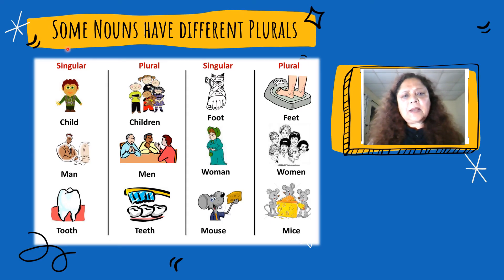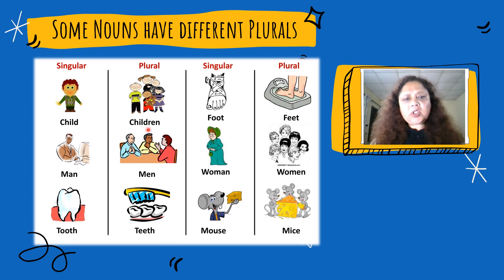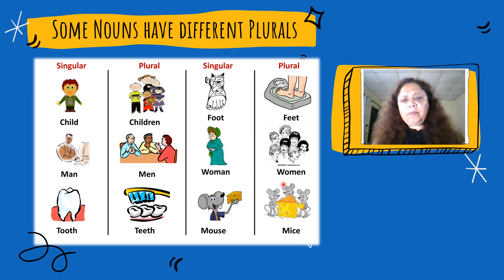Some nouns have different plurals. For example: child, children; man, men; tooth, teeth; foot, feet; woman, women; mouse, mice.